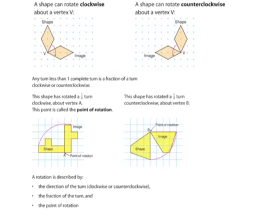Let's take a look at a few more rotations. A shape can be rotated clockwise, in the direction that a clock turns, but it can also be counterclockwise — the opposite direction of a clock. So in this case, this would be like a 12 turning to about a 9 position, and it's going counterclockwise. This would be a quarter turn counterclockwise.